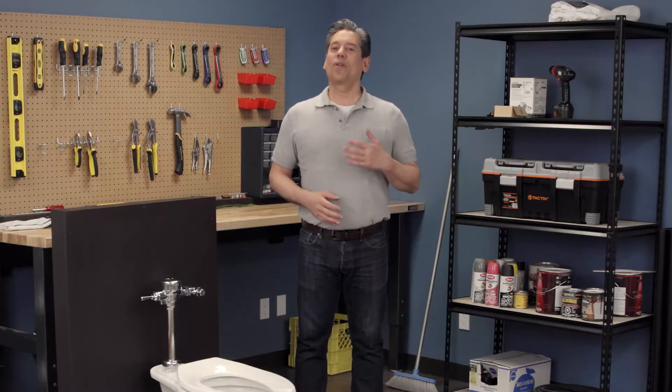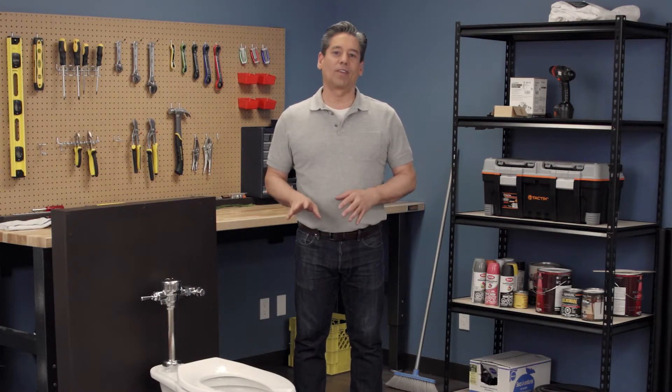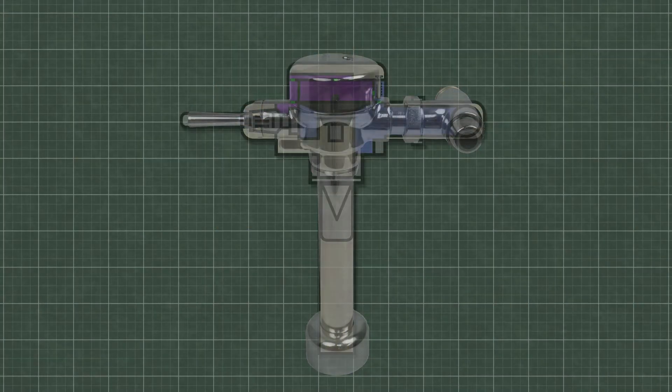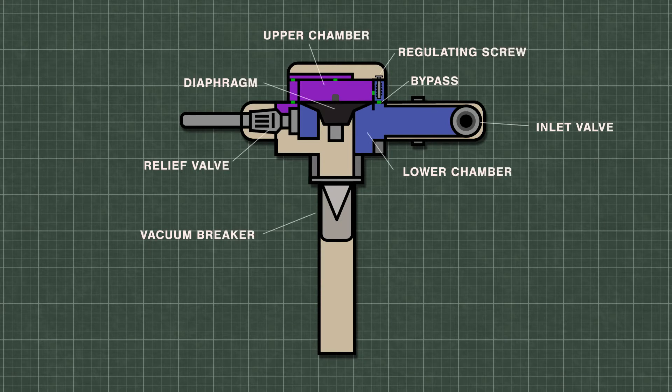Flushometers are also known as flush valves but function quite differently from the flush valves found in residential toilets. In a Delta Tech II, a flexible rubber diaphragm sits between the upper and lower chambers. At rest, high pressure water in the upper chamber keeps the diaphragm closed tightly on the valve seat.